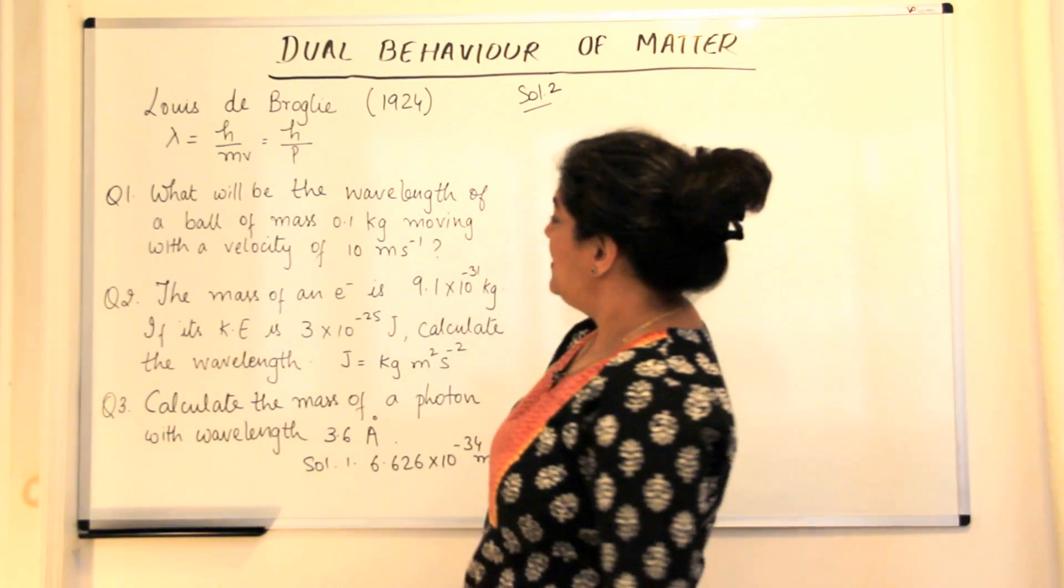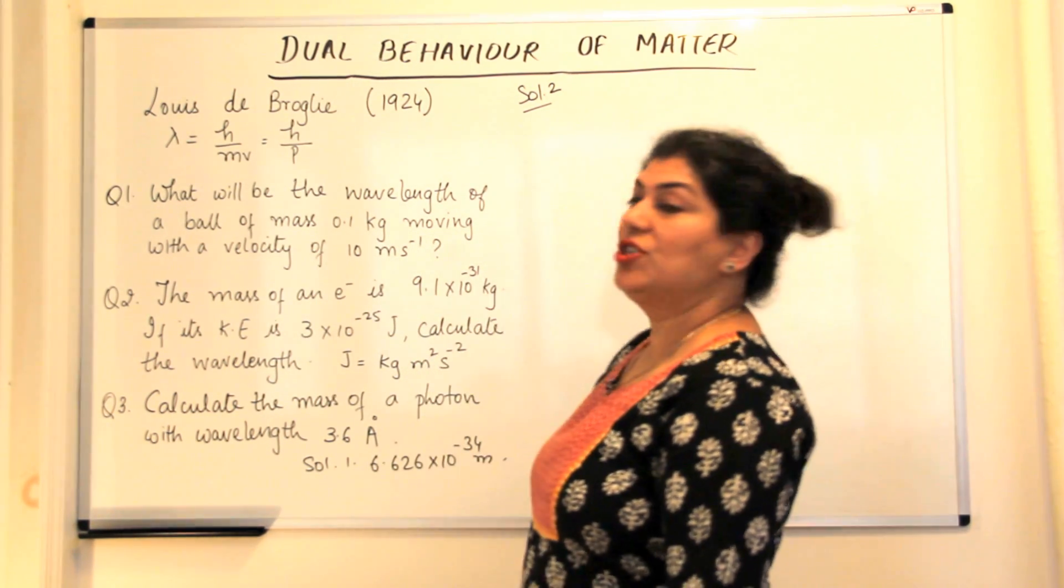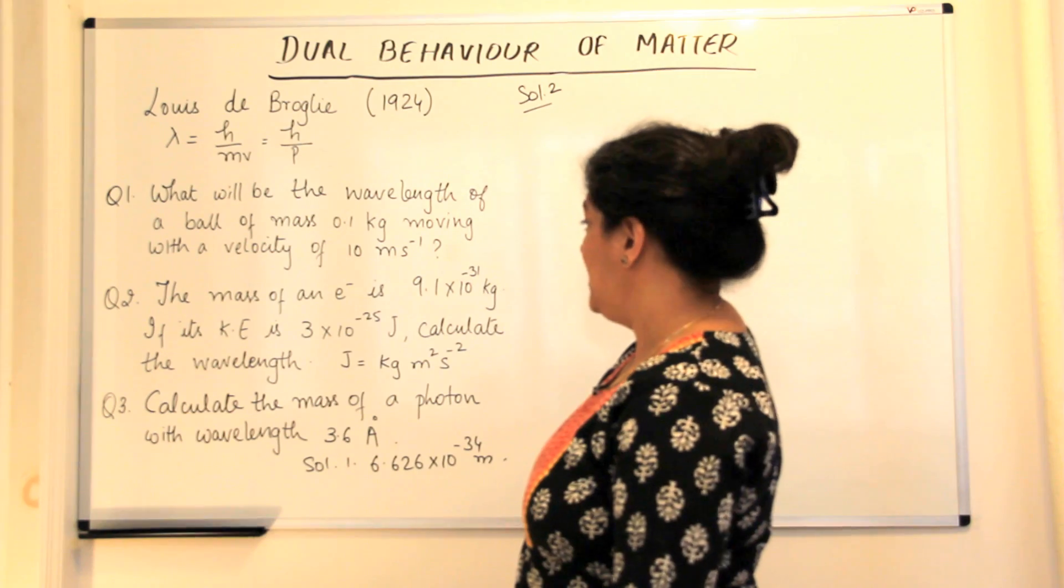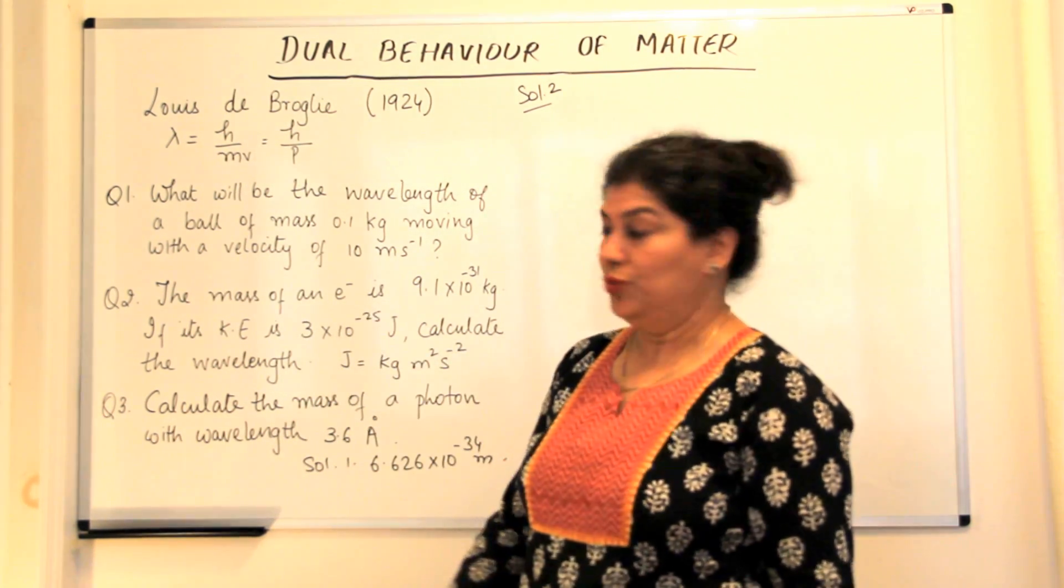So question 2 here is that the mass of an electron is 9.1 into 10 to the power minus 31 kgs. If its kinetic energy is 3 into 10 to the power minus 25 joules,